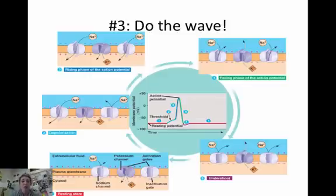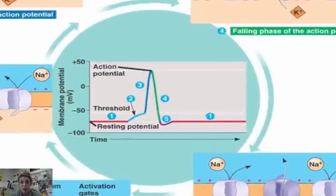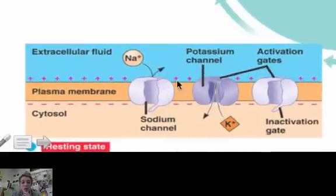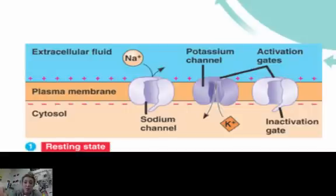When focusing on action potential: the resting rate is negative 70 millivolts. Once the threshold is met, you have depolarization, then repolarization, the refractory period, and then back to resting potential. At resting state, the sodium channels are blocked — there's potassium inside — and it's negative relative to the fluid outside the axon.